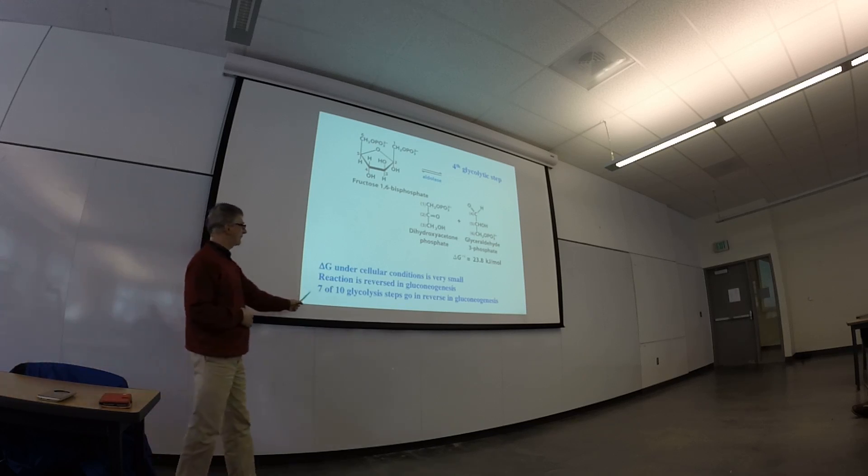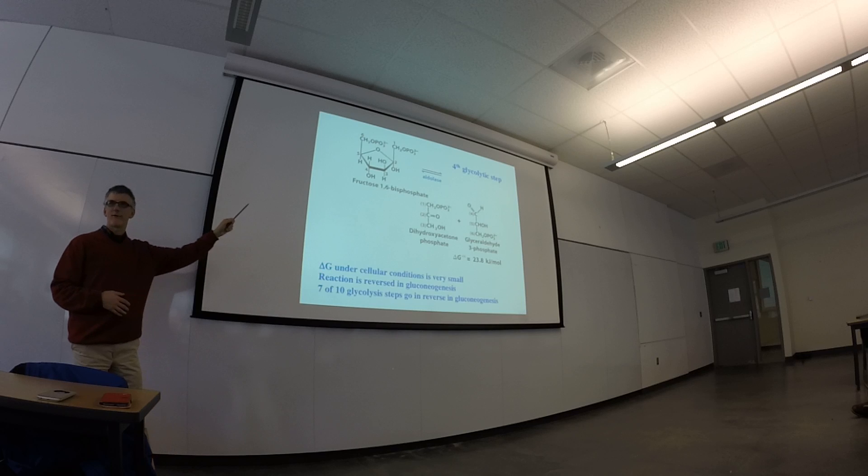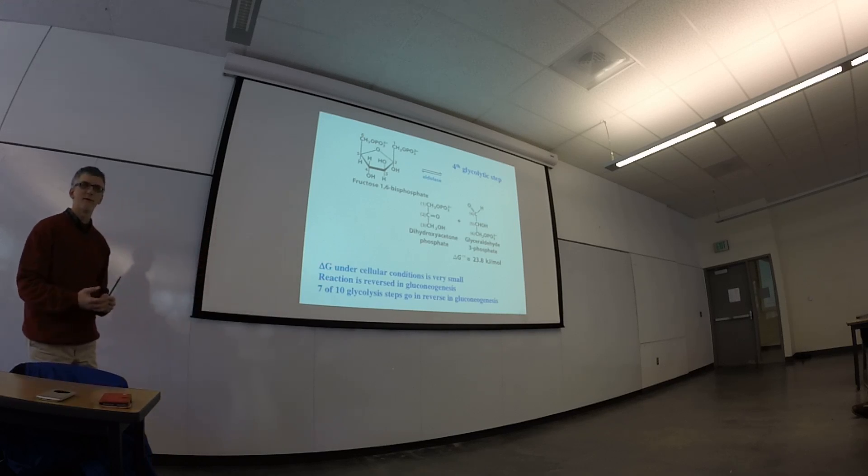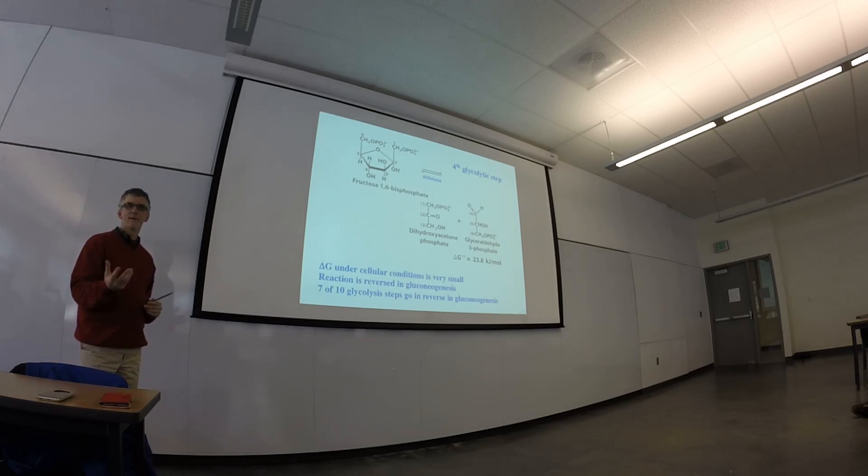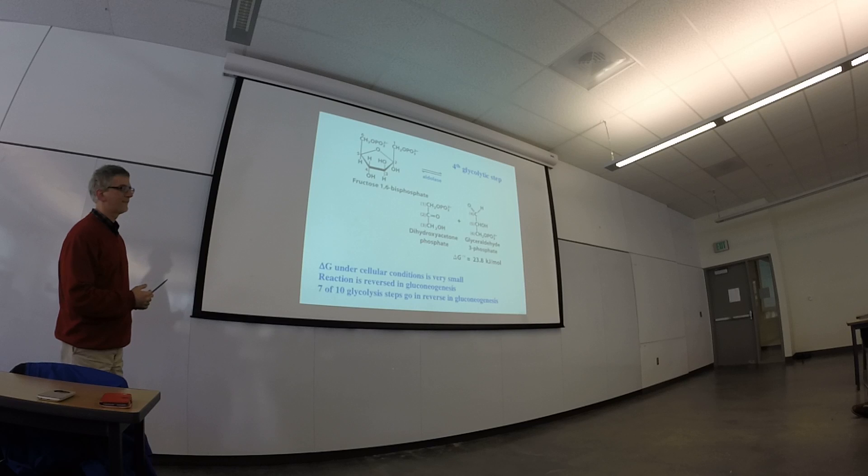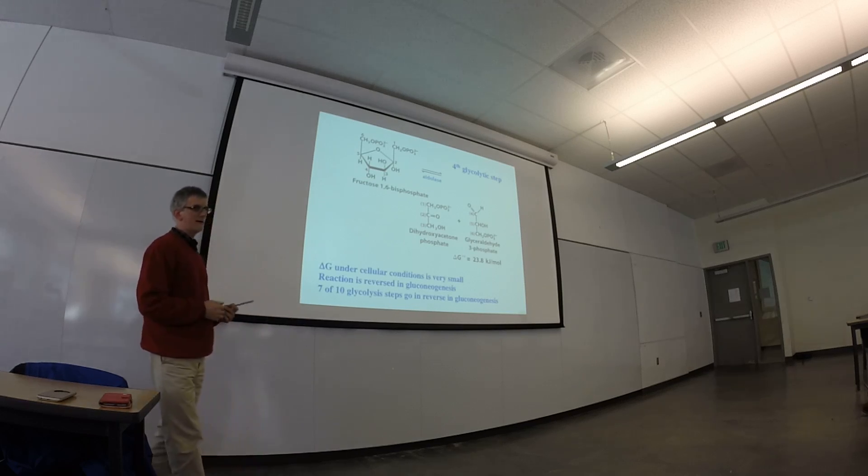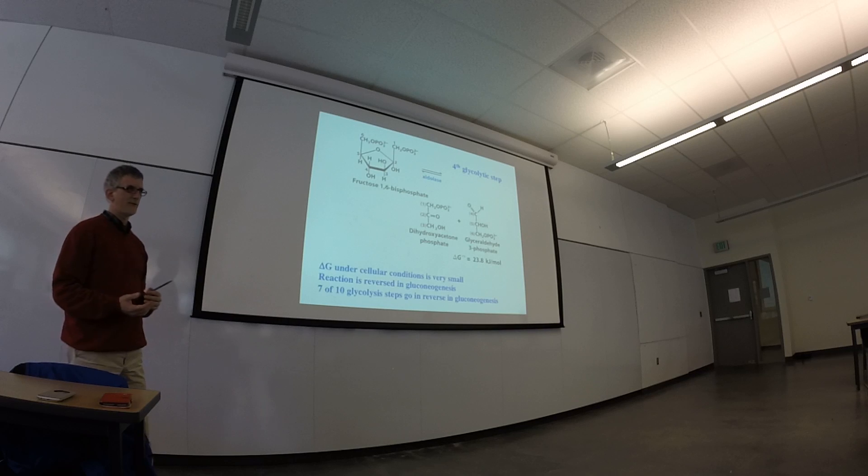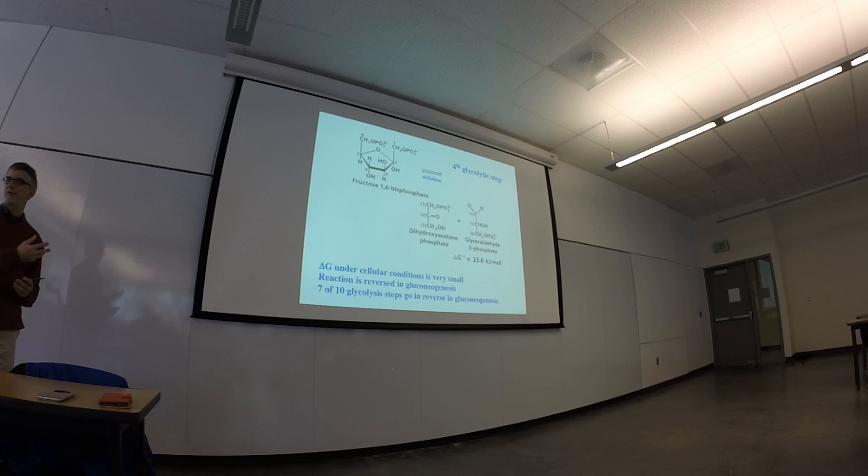So seven of the steps in glycolysis go in reverse for the pathway that goes from pyruvate to glucose—that's called gluconeogenesis, and we'll talk about that a little bit later in the class. It turns out that the reactions that are going to be the subject of regulation are going to be the ones that are not reversible. The reactions that are irreversible are the ones that are going to be regulated. The ones that are reversible under cellular conditions will be able to go either way, and so those are not points of regulation. So this is not a point of regulation—aldolase can go the other way and just combine these two compounds.